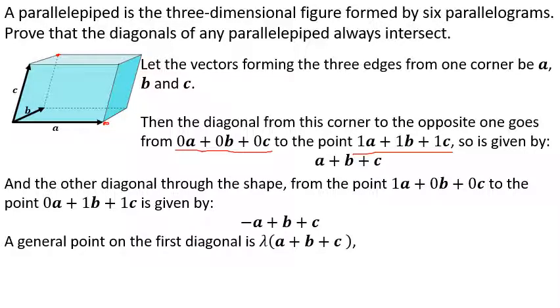And now we get the general points. The general point on the first diagonal means some point along the line from the bottom left front corner to the top right back corner. And that is given by just some multiple of that vector A plus B plus C. The second one we start by following the vector A to take us initially to the corner we want to start from. And then we go some multiple of the vector in the direction of that top left back corner, which is negative A plus B plus C. And then we equate them.